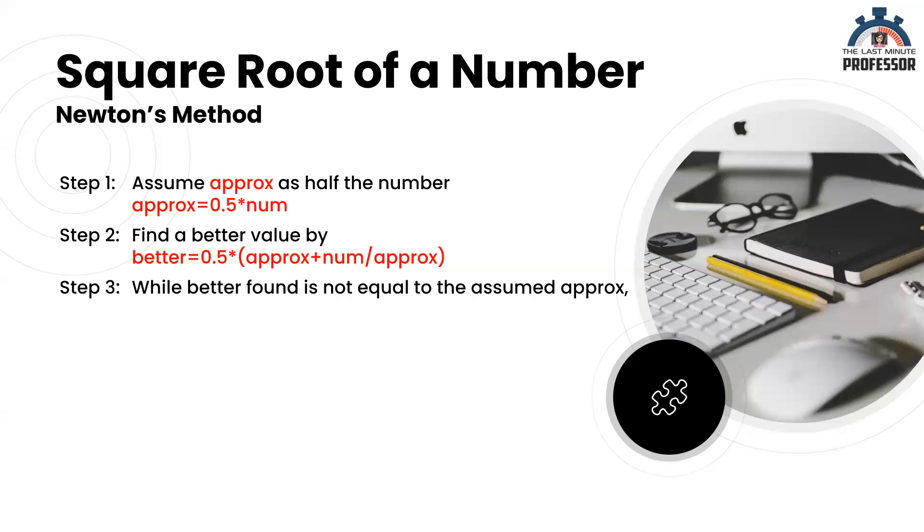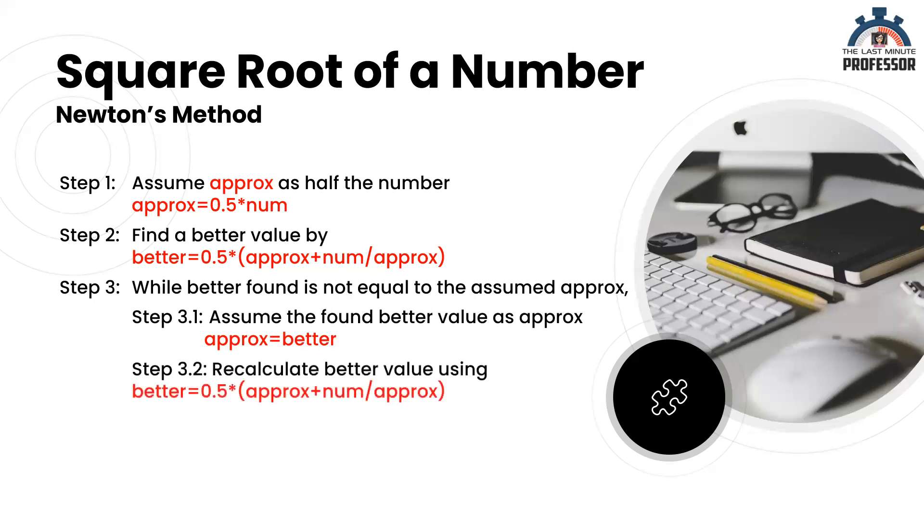We shall take the better value found in the previous step as approx and re-attempt to calculate even a better answer than that using the same better formula, that is better is equal to half of approx plus num by approx. We repeat these two steps, that is step 3.1 and 3.2, while better value found is not equal to the assumed approximate value.